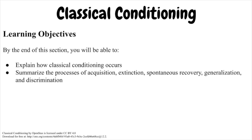Learning Objectives. By the end of this section, you will be able to explain how classical conditioning occurs, and summarize the processes of acquisition, extinction, spontaneous recovery, generalization, and discrimination.